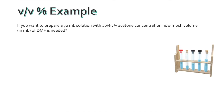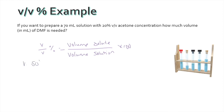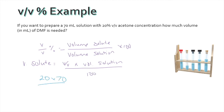Volume per volume is commonly used when the components of the solution are in a liquid state. Let's look at how to do the preparation of a solution by the mix of DMF and acetone. If you want to prepare a 70 milliliter solution with a 20 volume per volume percent concentration, how much volume in milliliters of DMF is needed? Volume per volume percent is equal to the volume of the solute divided by the volume of the solution, multiplied by 100. Rearranging, the volume of the solute equals volume per volume percent multiplied by the volume of the solution, divided by 100. Plugging in 20 percent multiplied by 70 milliliters divided by 100, we get 14 milliliters of acetone and 56 milliliters of DMF.